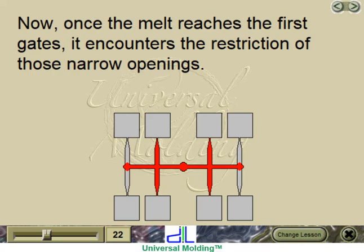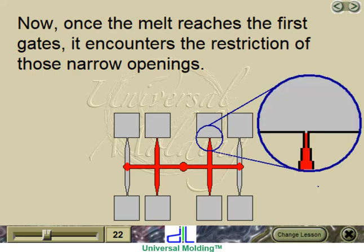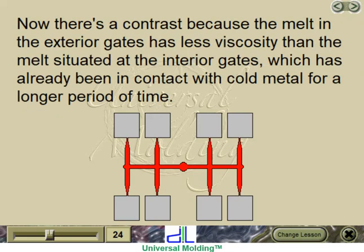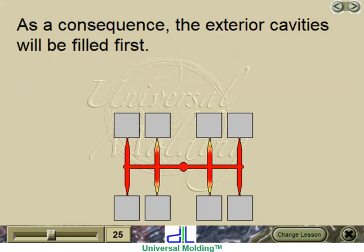Once the melt reaches the first gates, it encounters the restriction of those narrow openings. The melt will prefer to continue flowing through the unfilled runners since it is the path of least restriction, until it encounters the same difficulty — the restriction of small gates. The melt at the exterior gates has less viscosity than the melt at the interior gates, which has been in contact with cold metal for a longer period. As a consequence, the exterior cavities will be filled first.